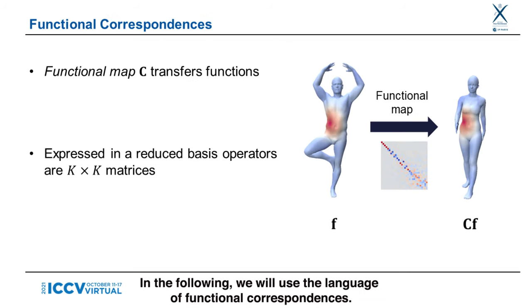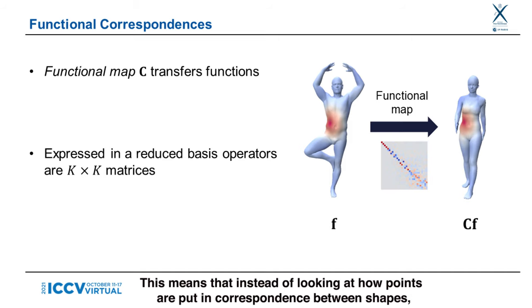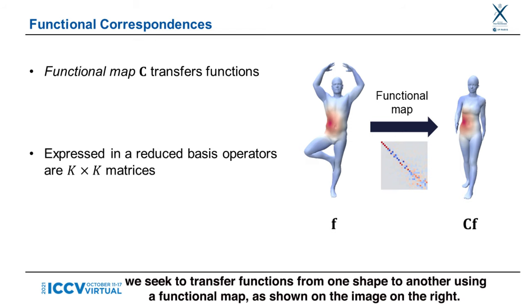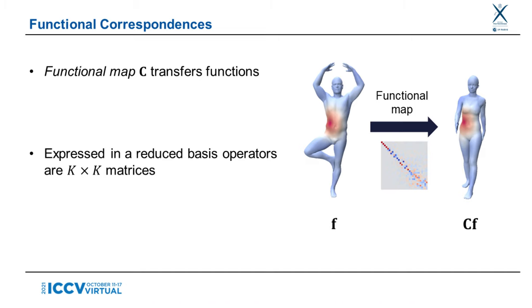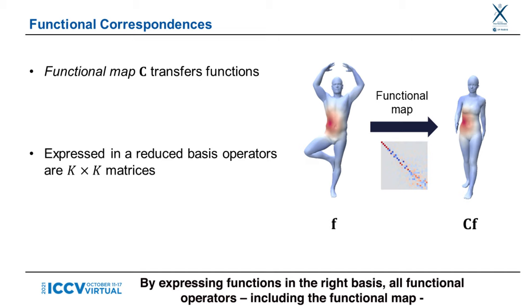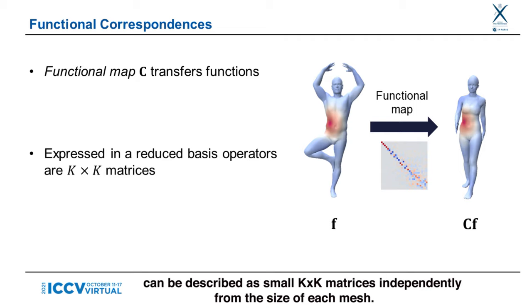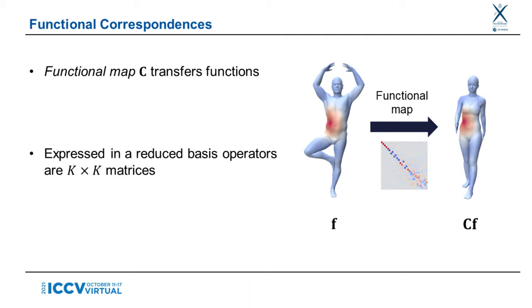In the following, we will use the language of functional correspondences. This means that instead of looking at how points are put in correspondence between shapes, we seek to transfer functions from one shape to another using a functional map, as shown on the image on the right. By expressing functions in the right basis, all functional operators, including the functional map, can be described as small k by k matrices independently from the size of each mesh. Pointwise correspondences can later be recovered.